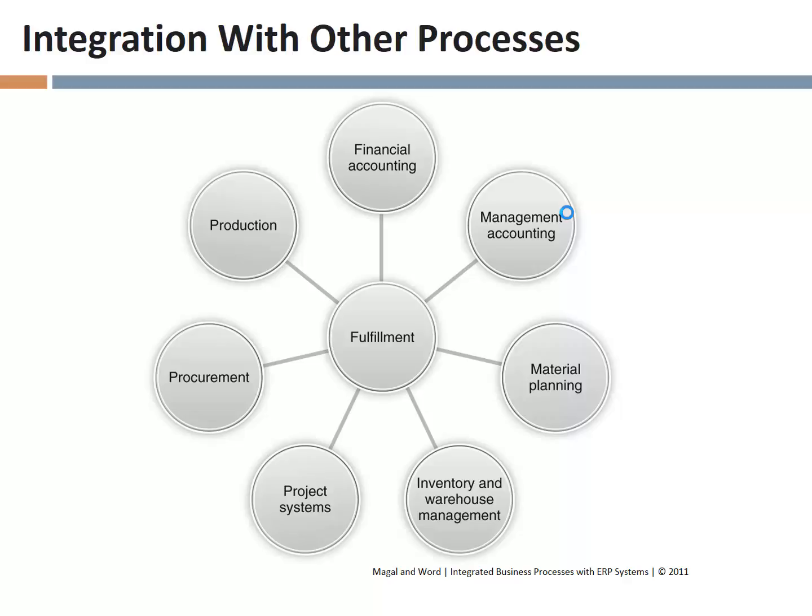We didn't emphasize this, so I'll go ahead and answer this one. The interaction between fulfillment and management accounting is, first of all, the receipt of the sales order, and then the resulting revenue, because we will use the revenue numbers for profitability analysis. So the interaction between fulfillment and management accounting is profitability analysis and the sales order itself.